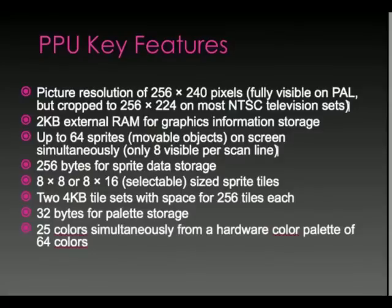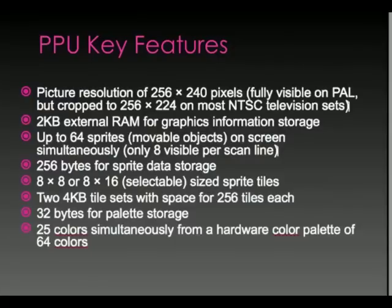Sprites can be 8 by 8 pixels or 8 by 16 pixels, and that's selectable. The sprites themselves are very small — large enemies or spaceships in older NES games were usually many sprites put together. There are two 4-kilobyte tile sets with space for 256 tiles each, and 32 bytes for palette storage. Very importantly, there are 25 colors on screen simultaneously from a hardware color palette of 64 colors. So while modern consoles can display millions of colors, here you only had 64, and of those, only 25 could be on screen at one time.